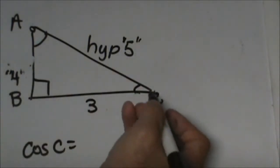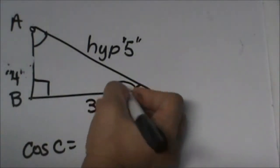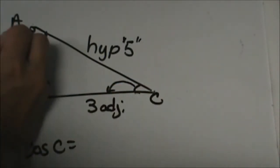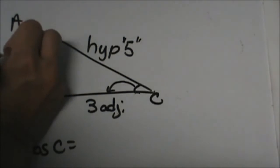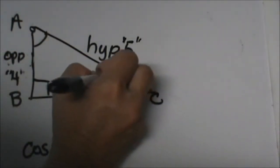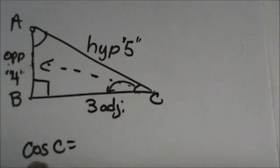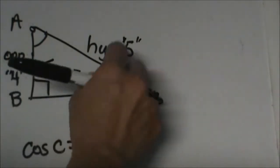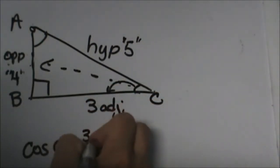Now the adjacent is this side which is 3 and the side that is 4 is the opposite of C. So the cosine of C is adjacent over hypotenuse or 3 fifths.